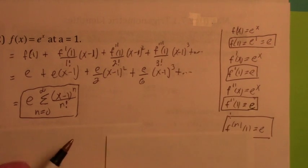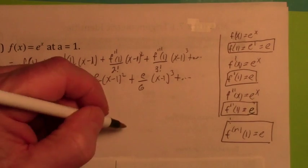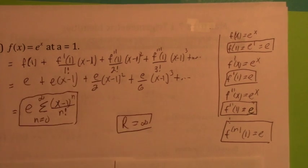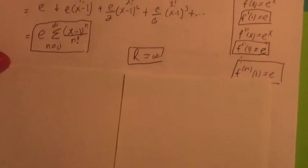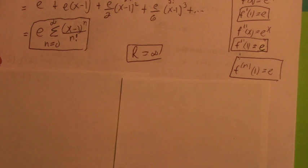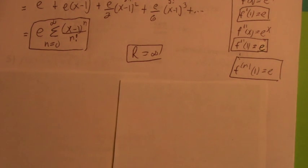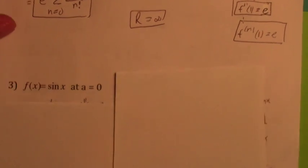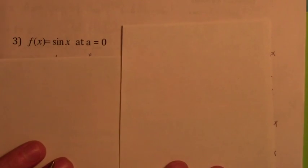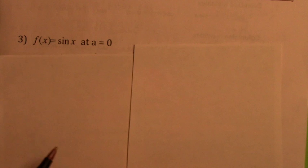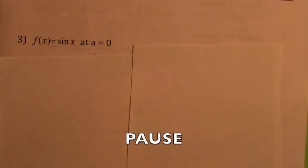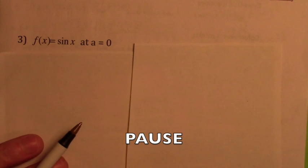The radius of convergence turns out to be infinity on this one too. So you can form the Taylor series at any point. The Maclaurin series seems to be the easiest — it's not as messy — but in theory you can form the Taylor series at any point you want.